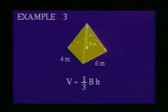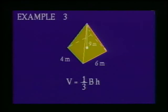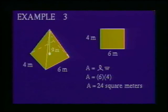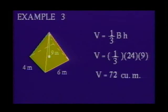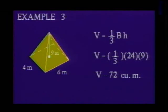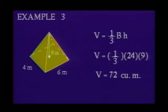Example 3: What is the volume of a rectangular pyramid whose base measures 6 meters by 4 meters and whose altitude is 9 meters? To calculate the volume of a pyramid, we will use the formula V equals one-third times capital B times H, where capital B is the area of the base and H is the height. Before using this formula, we must find the area of the base. To calculate the area of a rectangle, we multiply the length by the width, which gives us 24 square meters. Now substituting 24 for the area of the base and 9 for the height, we have V equals one-third times 24 times 9. The volume of the rectangular pyramid is 72 cubic meters.